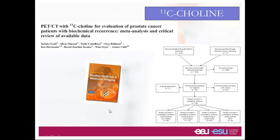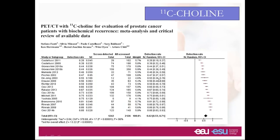This is a meta-analysis we ran a couple of years ago on choline in biochemical recurrence. Pulling together the published papers, the detection rate is around 60%. So 60% is not bad, but it's much less than we would hope to obtain, and that's the reason why other radiotracers have been studied.